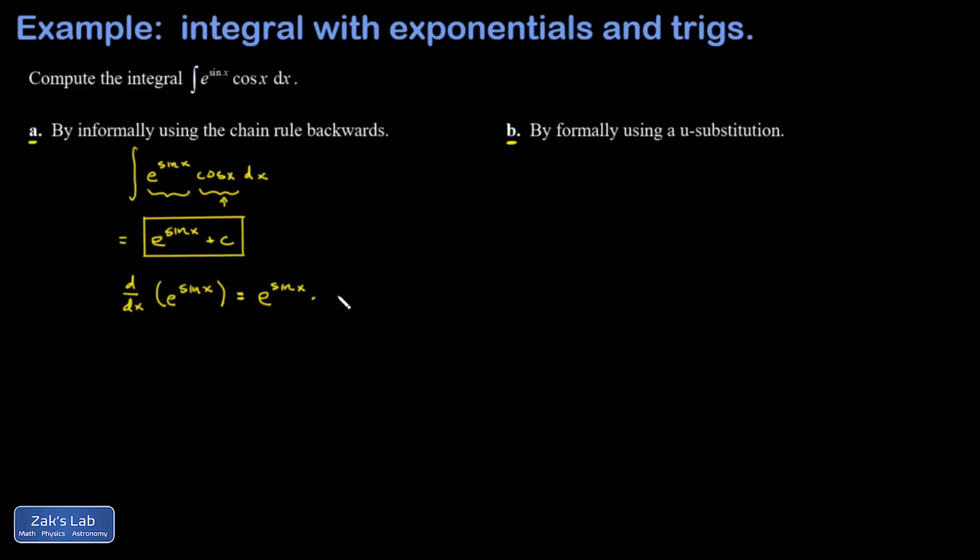The chain rule then says you have to tack on the derivative of that inner function with respect to x, which is cosine x. And I've verified that I have the right antiderivative.